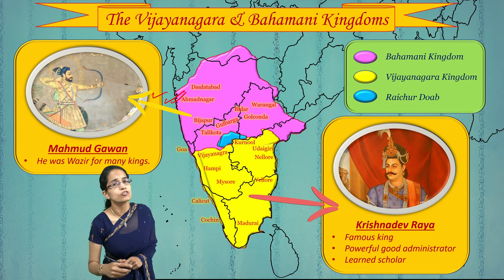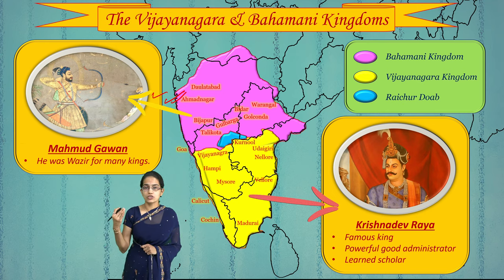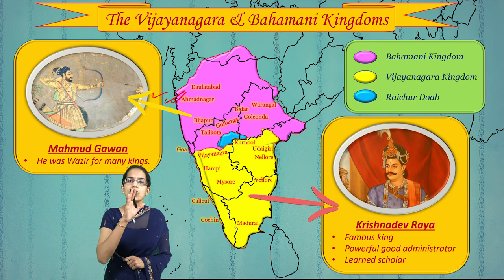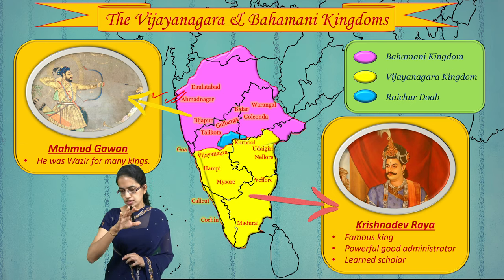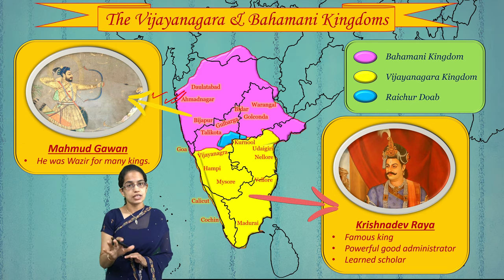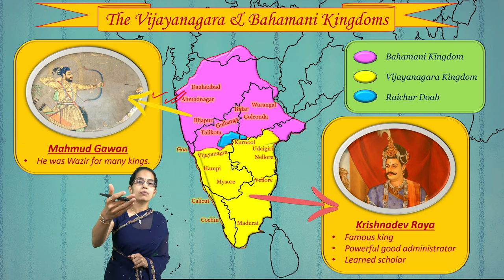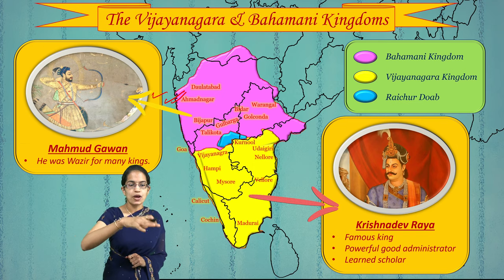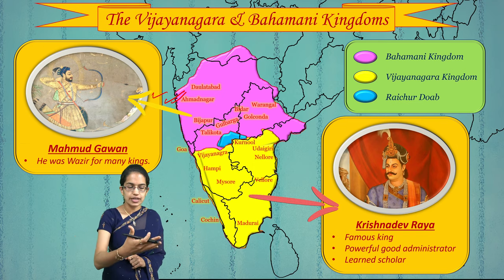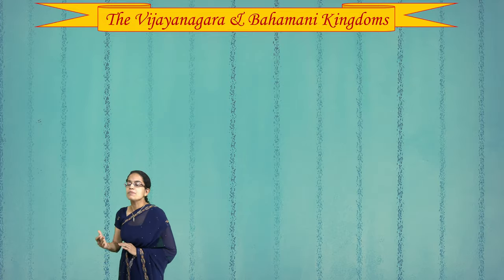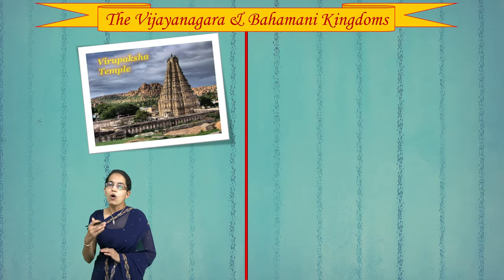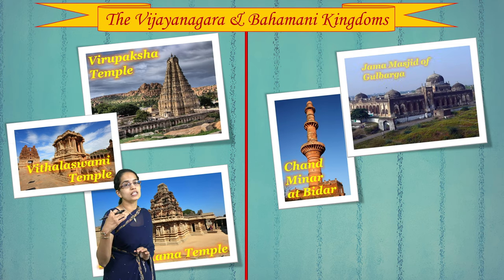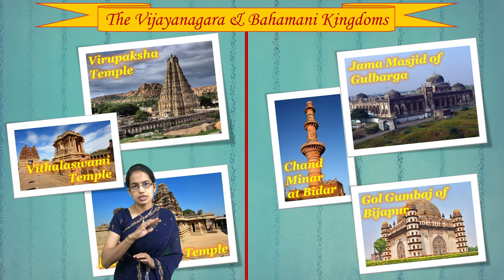However, the successors of Krishnadev Rai were not strong, and ultimately, at the Battle of Talikota, there was a complete decay of the Vijayanagar empire's power. The five Deccan sultanates, which had earlier divided from the Bahamani kingdom, came together as a combined force and achieved victory over the Vijayanagar empire, leading to its annexation.